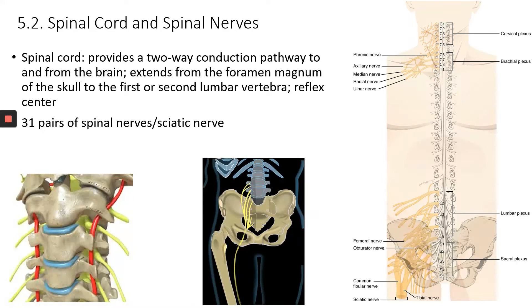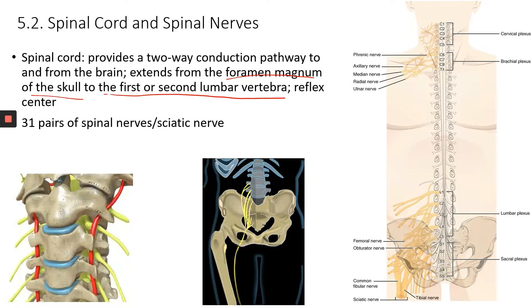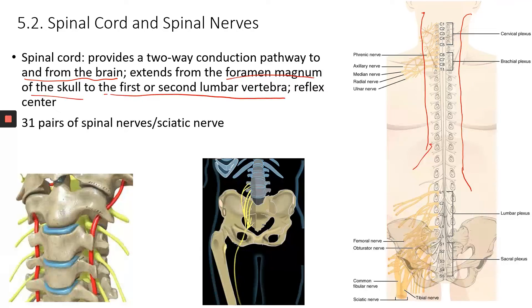The spinal cord extends from the foramen magnum of the skull — the big opening at the inferior aspect of the skull — and goes down to about the first or second lumbar vertebra, where it stops. It actually doesn't go all the way down to the end of the vertebral column. The spinal cord provides a two-way conduction pathway to and from the brain: spinal nerves collect sensory information and transmit it up to the brain to be processed.